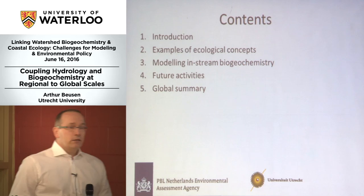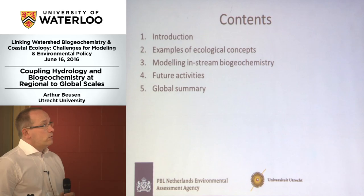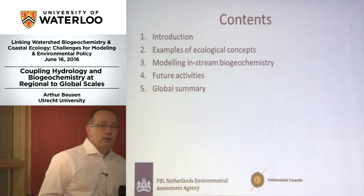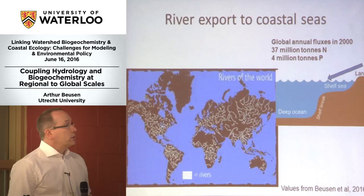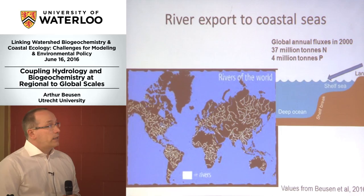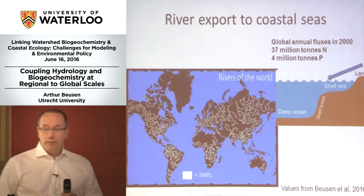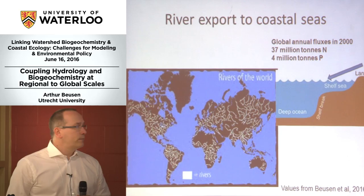My presentation is very simple: a small introduction, some examples of ecological concepts and models, then some presentation of the modeling of in-stream biogeochemistry and some future activities. Let's start with the results, because that's why we do it. In 2000, we calculated there was a flux of 37 million tons of nitrogen going to the coast, and almost 4 million tons of phosphorus going to the coast. But how does it come there? Can we explain that? Where does it come from?